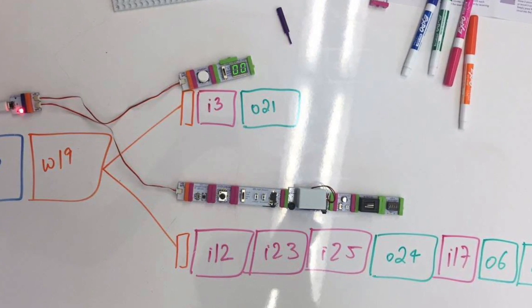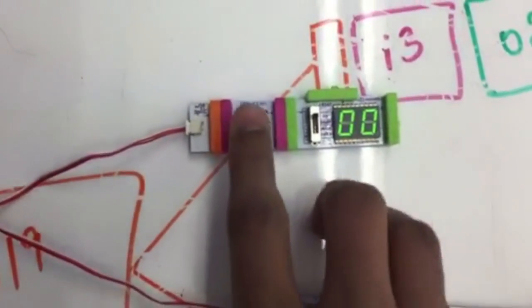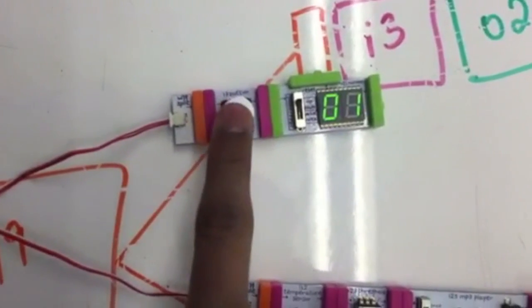We created a device that would invite the child to press a button once they were done using an appliance, as small as a toaster or as large as an oven, and the counter would visually reward them with a number increase.